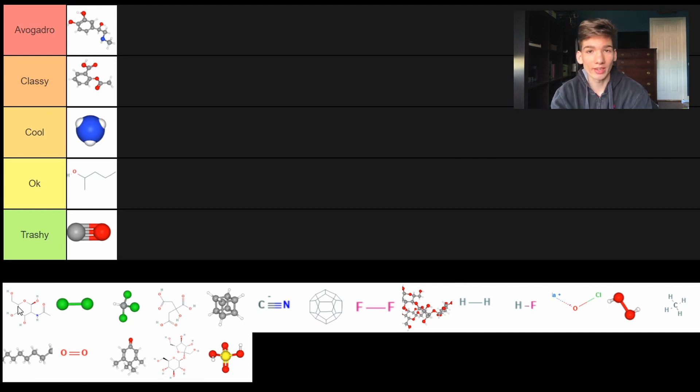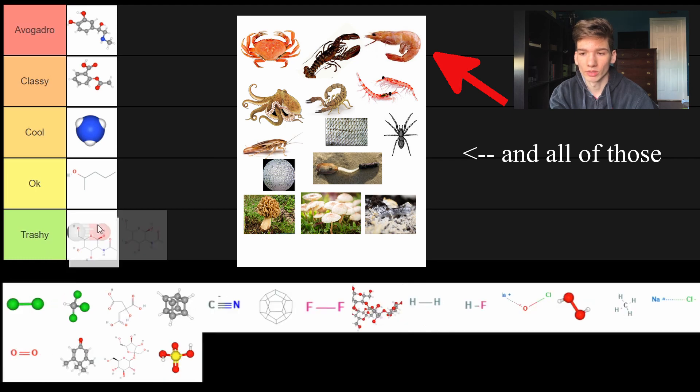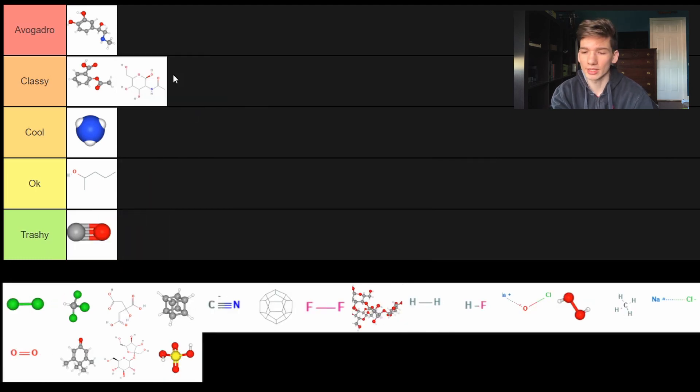Next we have Chitin. Chitin's the stuff that's found in mushrooms and mollusk shells. This one was specifically from a shrimp. So that's a pretty classy chemical.